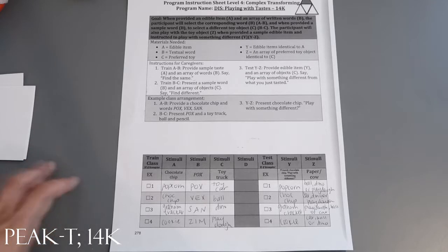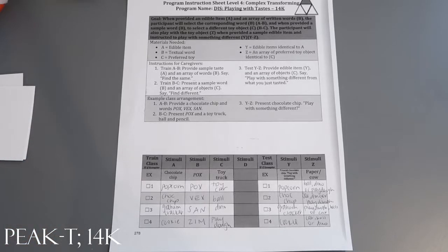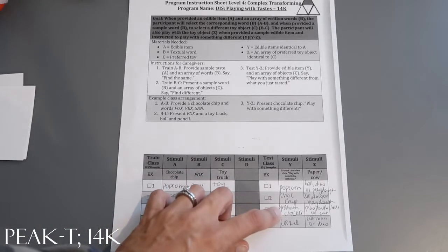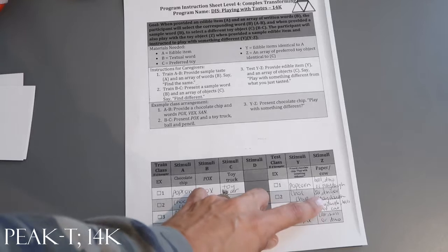The third block is test Y to Z, which you would be testing. So you would not be prompting, reinforcing, or giving any feedback. You're going to give them the edible item and the array of those objects and say 'play with something different from what you tasted.'